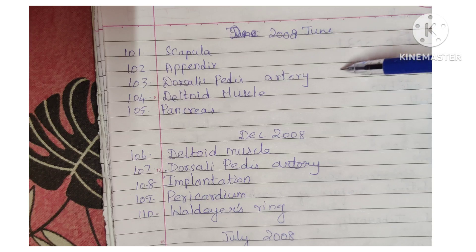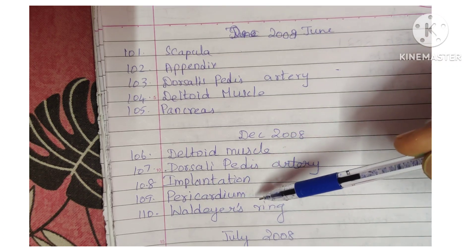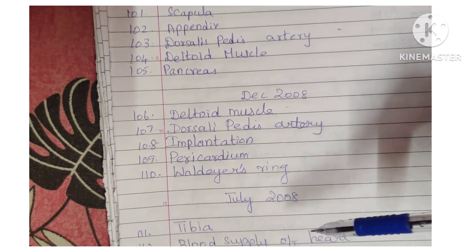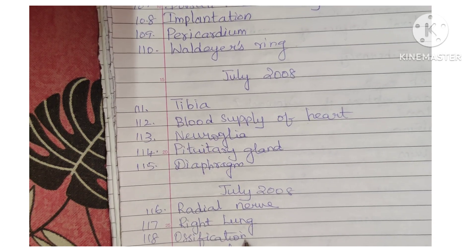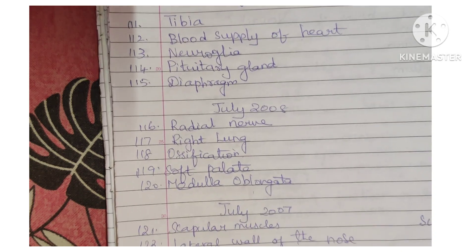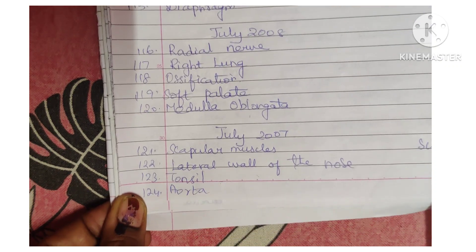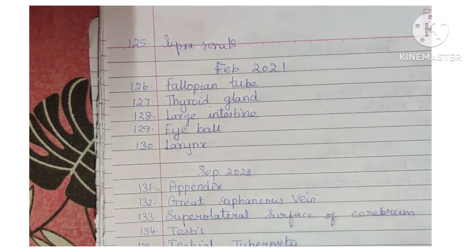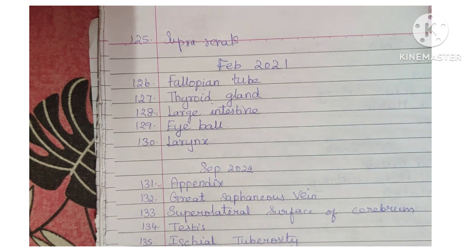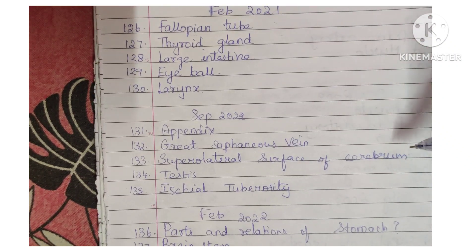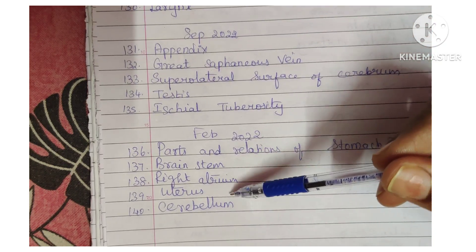Final anatomy topics: scapula, appendix, dorsalis pedis artery, deltoid muscle, pancreas, implantation, pericardium, Waldeyer's ring, tibia, blood supply of heart, neuroglia, pituitary gland, diaphragm, radial nerve, right lung, ossification, soft palate, medulla oblongata, scapular muscles, lateral wall of nose, tonsil, aorta, suprarenal gland, fallopian tube, thyroid gland, large intestine, eyeball, larynx, appendix, great saphenous vein, superior lateral surface of cerebrum, testis, ischial tuberosity, parts and relations of stomach, brain stem, right atrium, uterus, and cerebellum.